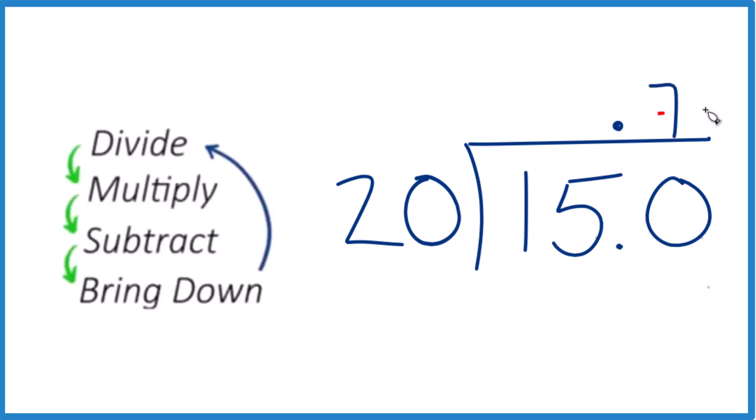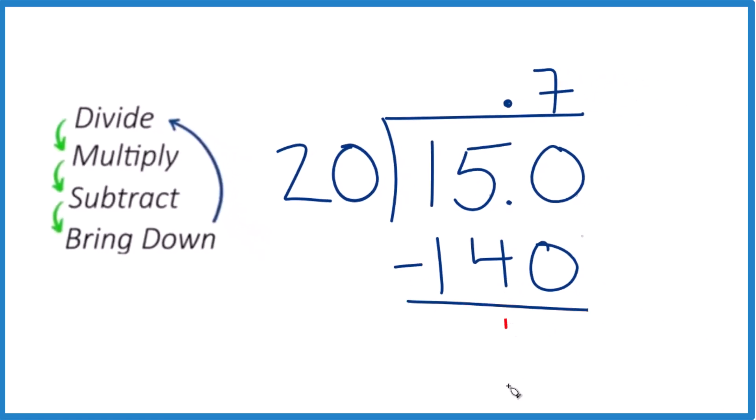And 7, 7 times 20 would be 140. Now you subtract, and you get 10.